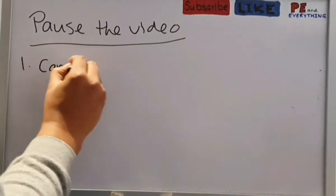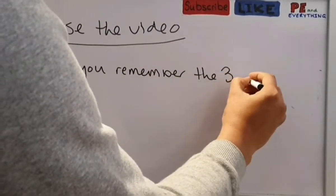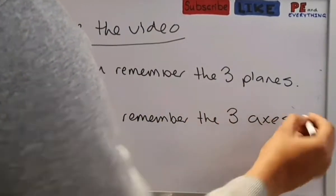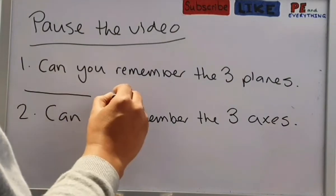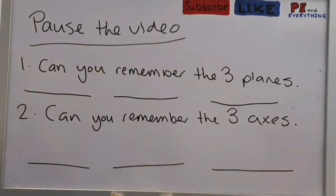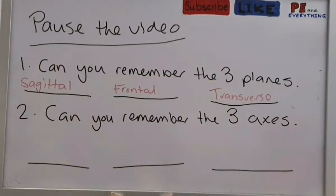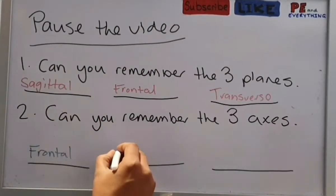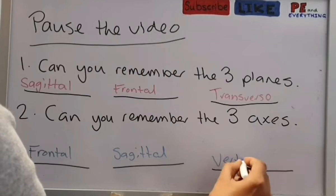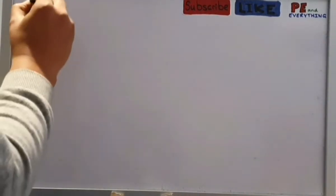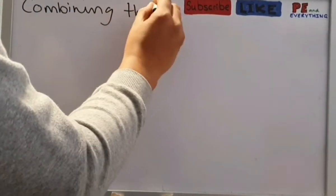If we pause the video for a minute, I want you to try your hardest to remember the three planes and also the three axes. See if you can do that now. Time is up. First, for the planes, we have the sagittal plane, forwards and backwards; the frontal plane, side to side; the transverse plane, top to bottom. For axes, we have the frontal axis, sagittal axis, and the vertical axis. I think we're making perfect progress.